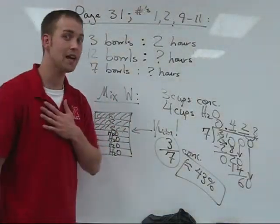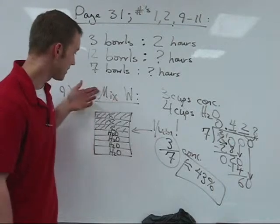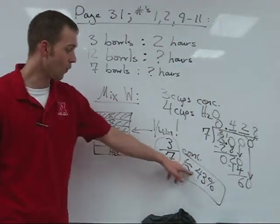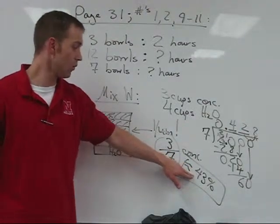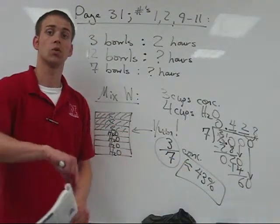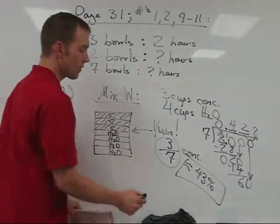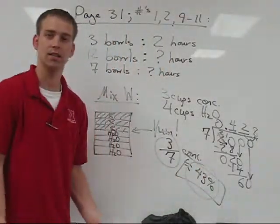So if I were going to make a batch of mixed W and use a hundred cups of everything, 43-ish of those cups out of those total hundred would be concentrated. So what it's going to ask you to do is find that most aptly, you want the highest percent of concentrate.